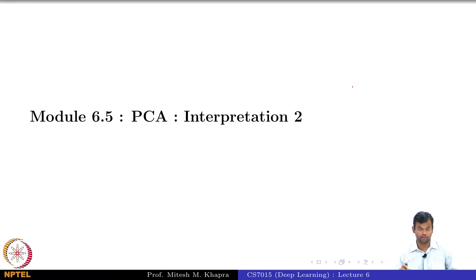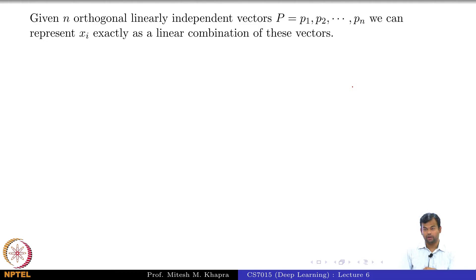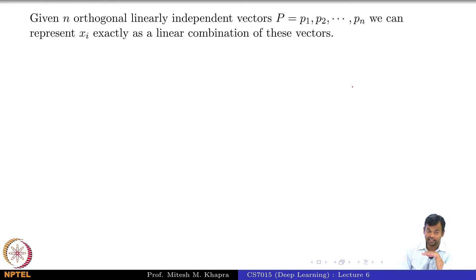That is what we look at in the second interpretation of PCA. So again, we have the same setup: given n linearly independent or n orthogonal vectors, we can represent X_i exactly as a linear combination of these vectors. What do I mean by exactly?